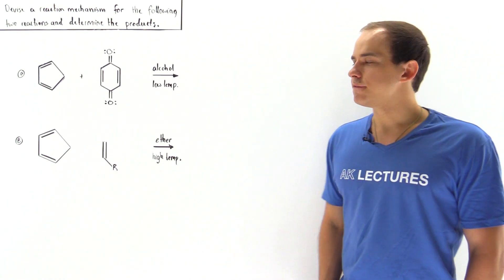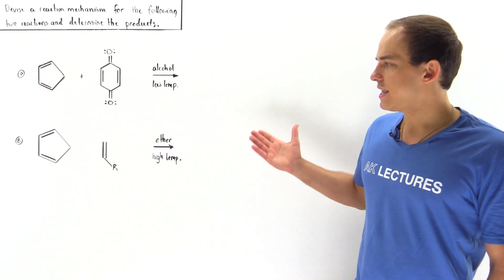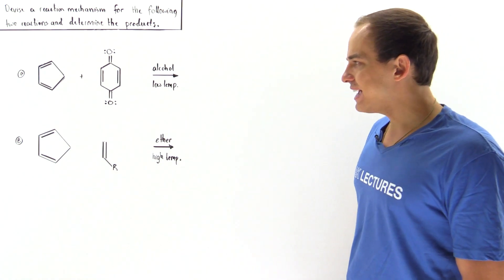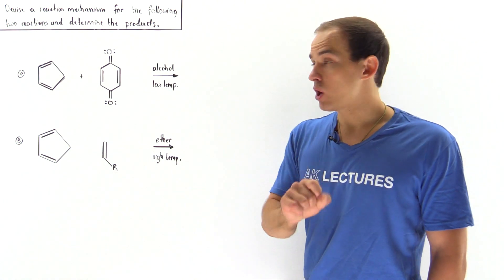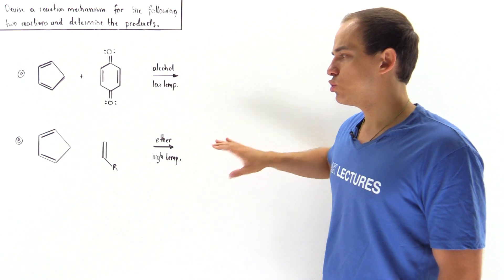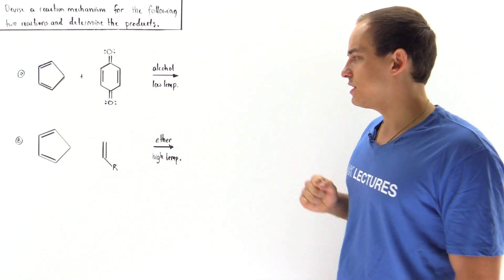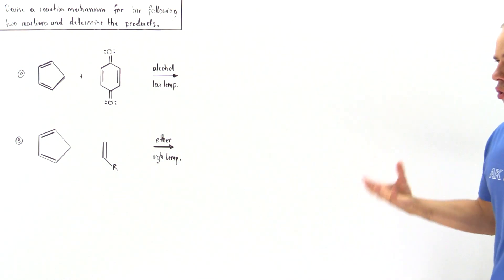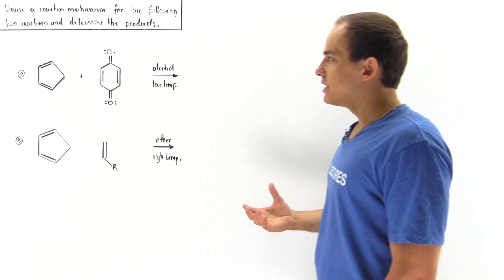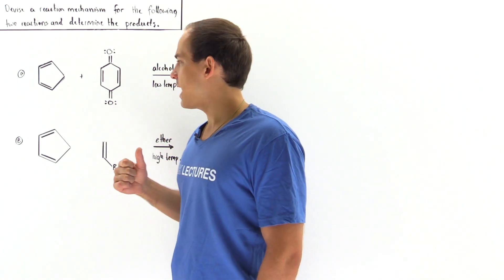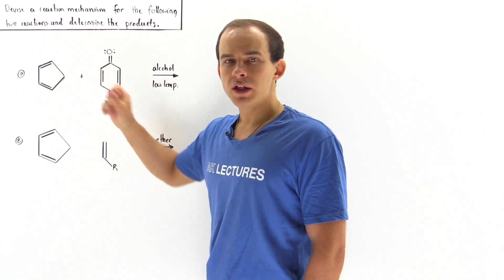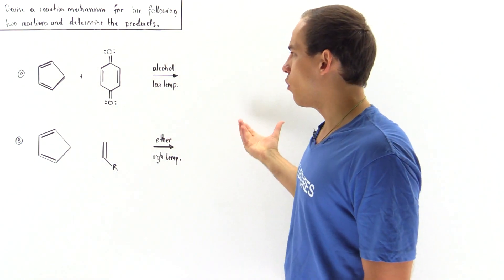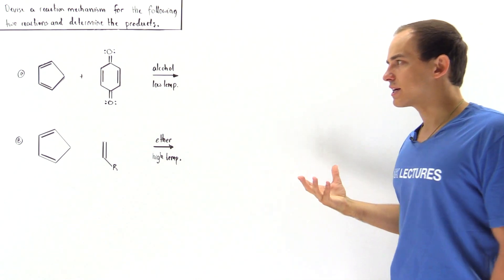Let's take a look at the following example that deals with determining what the reaction mechanism is as well as what the product is in these two reactions. Each one of these reactions is basically a Diels-Alder reaction. Let's begin with reaction A, where we have our 1,3-diene reacting with our alkene to form some type of product.